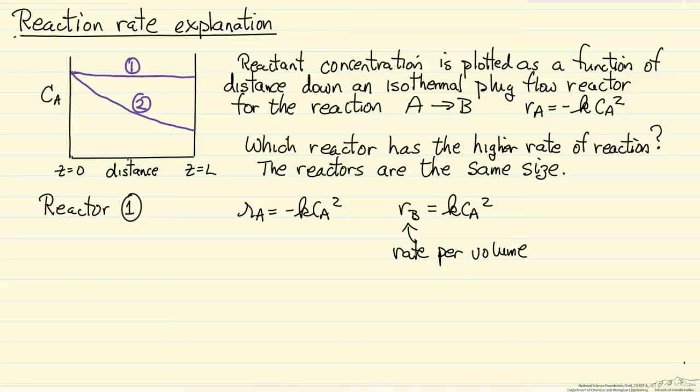And what we're interested in for the entire reactor, the rate for formation of B would just be this integral over the reactor, over the volume, or I could write this integral over the distance times the cross-sectional area of the reactor. And since, from this diagram, CA1 is greater than CA2, then reactor 1 has the highest rate of reaction.